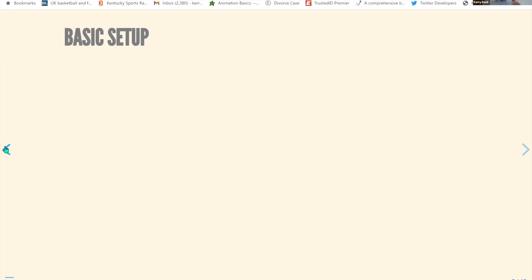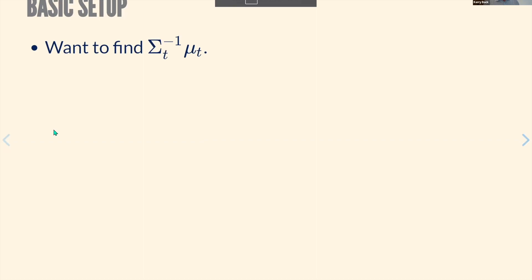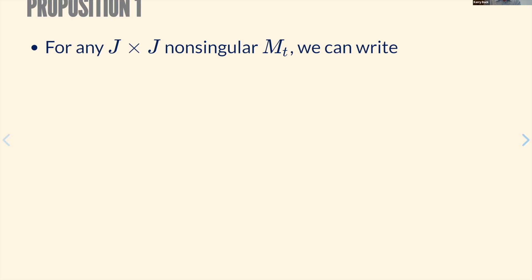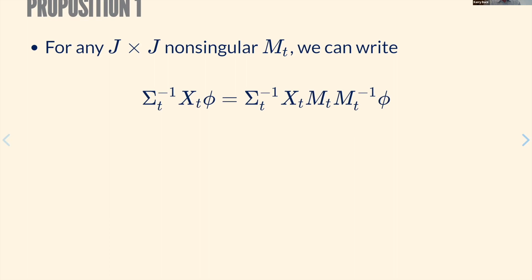The basic setup is that we want to find sigma-inverse times mu — the old problem of finding portfolios that span the mean-variance frontier, or equivalently span the SDF. The key assumption in the paper is that risk premia are linear in characteristics — linear combinations of the columns of the X matrix. Under this condition, we need to find sigma-inverse times X times phi, and what the paper studies is how to find sigma-inverse-X under this constraint.